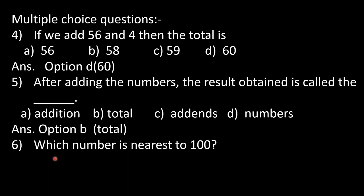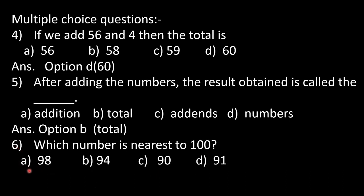In question number 6: which number is nearest to 100? Options: A) 98, B) 94, C) 90, D) 91. Counting from 90 to 100: 90, 91, 92, 93, 94, 95, 96, 97, 98, 99, 100 — the number nearest to 100 among the options is 98. So our option A is correct.